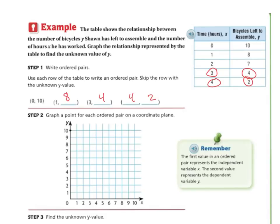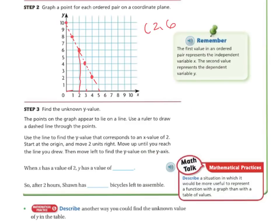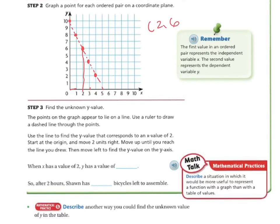So now I'm going to graph them. If 0 and 10 is my first number, there's my first point. The next one is 1 and 8, so I go over to 1 and up to 8. My next one is 2 and we don't know, so I'm going to leave that one. I go over to 3 and 4, and then the next one I go over 4 and up 2. Now since these points go in a straight line, the point where x equals 2 intersects right at 6. So I know those points are 2 and 6. When x has a value of 2, y has a value of 6. So after 2 hours, Sean will have 6 bicycles left to assemble.